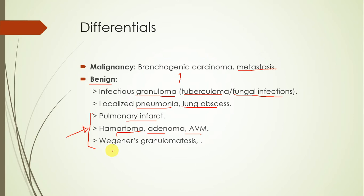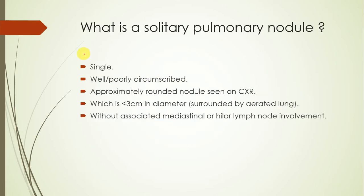Wegener's granulomatosis is a very distant possibility. If he had Wegener's granulomatosis, he would likely have upper respiratory tract symptoms involving the nose, ears, or sinuses, as well as hematuria, and systemic symptoms such as fever, arthralgia, and skin purpura. All of those are absent, which leaves us to believe this might be one of those benign lesions — or it might be a cancer.